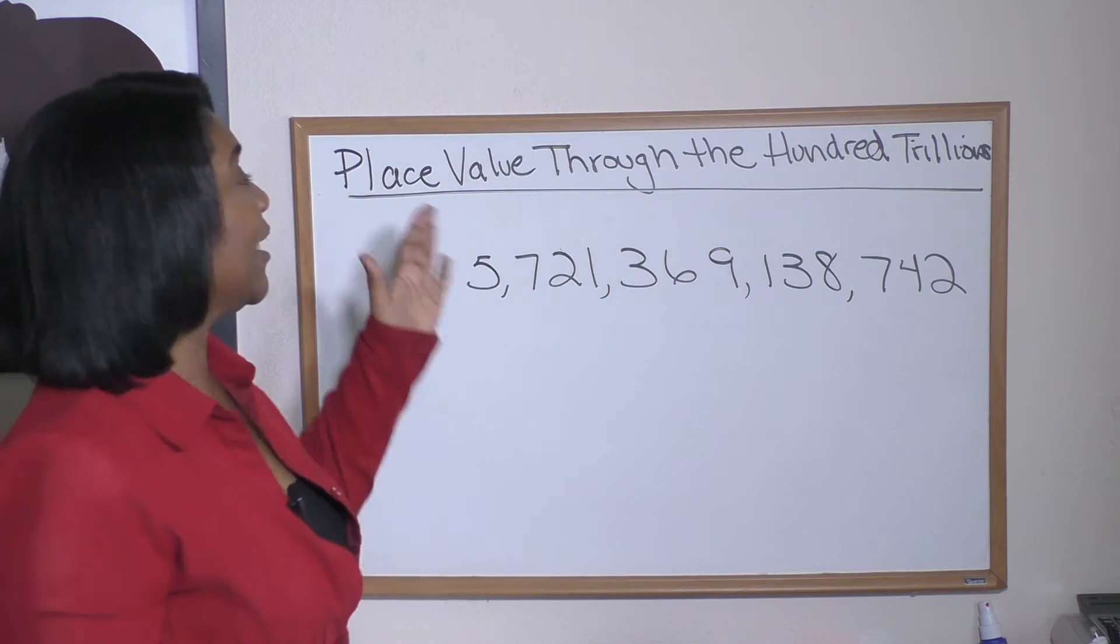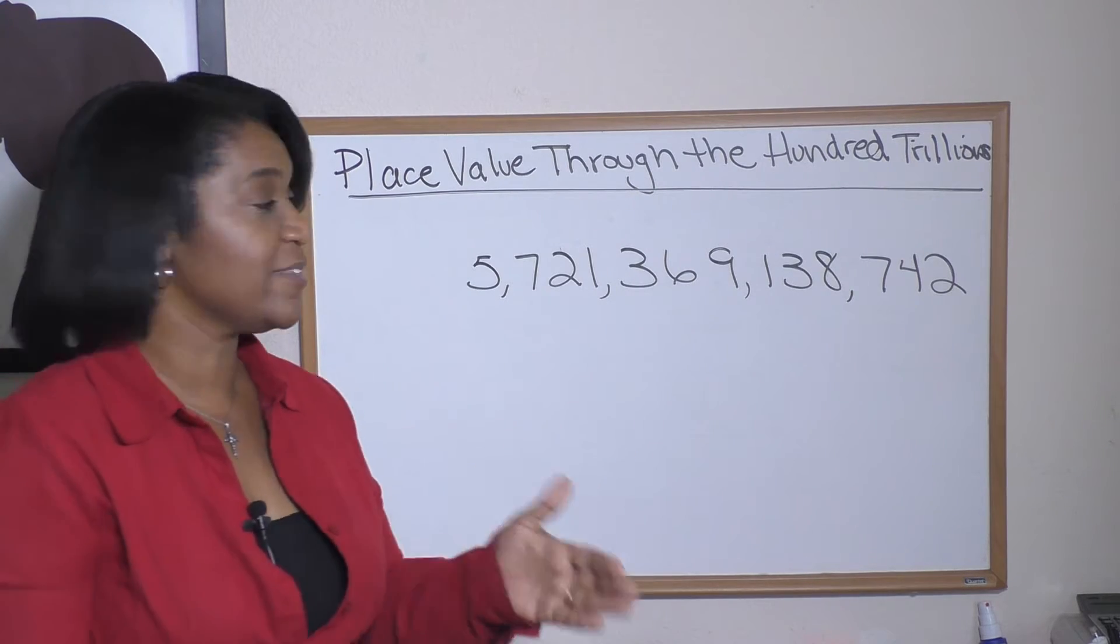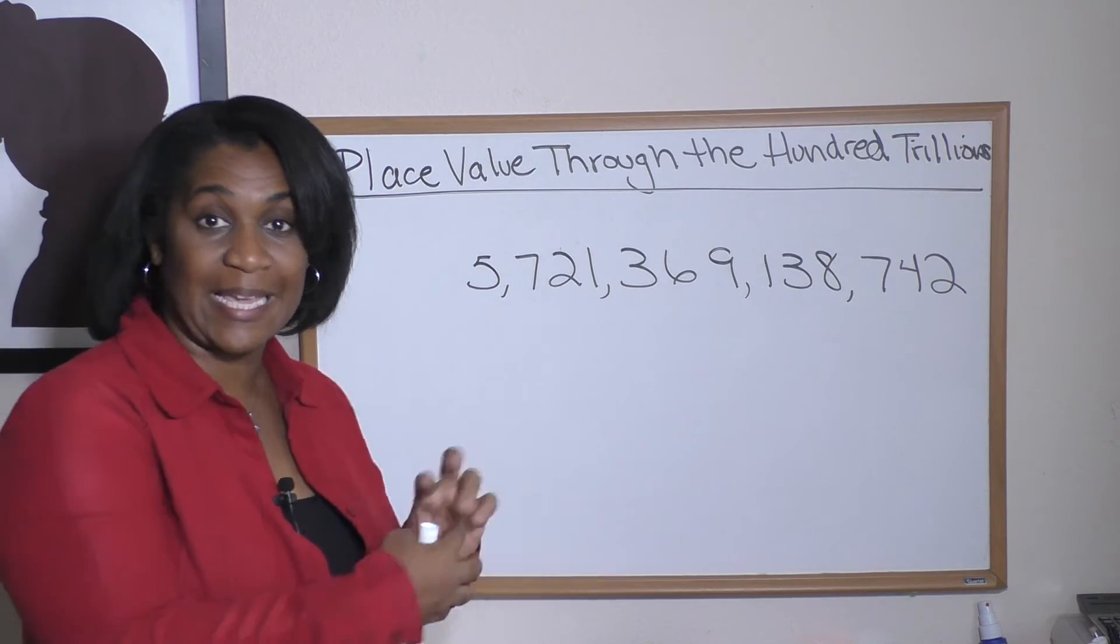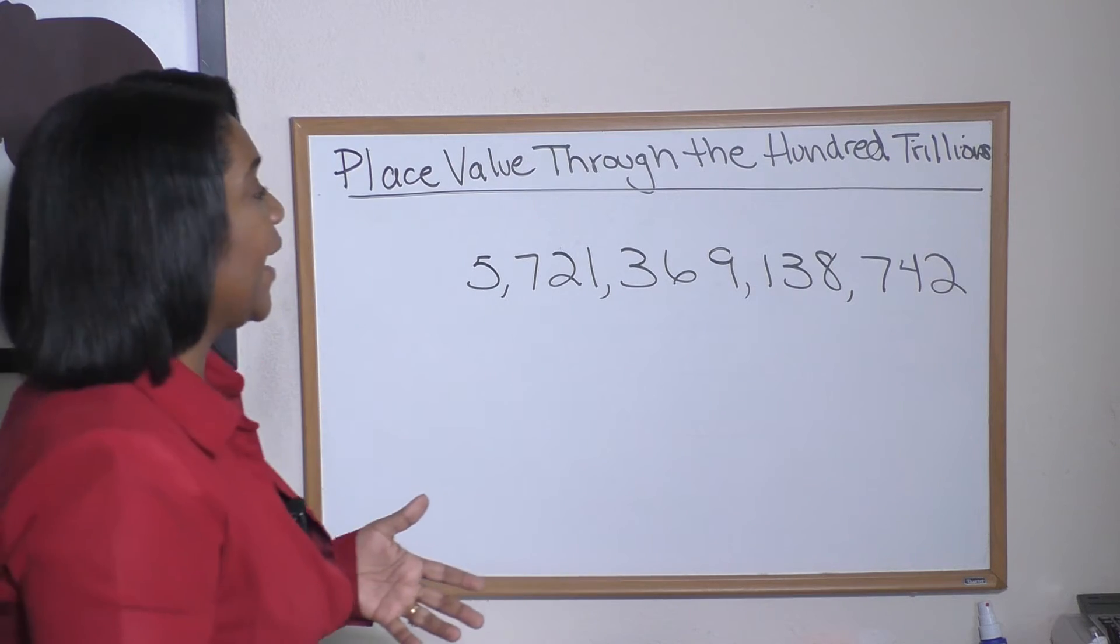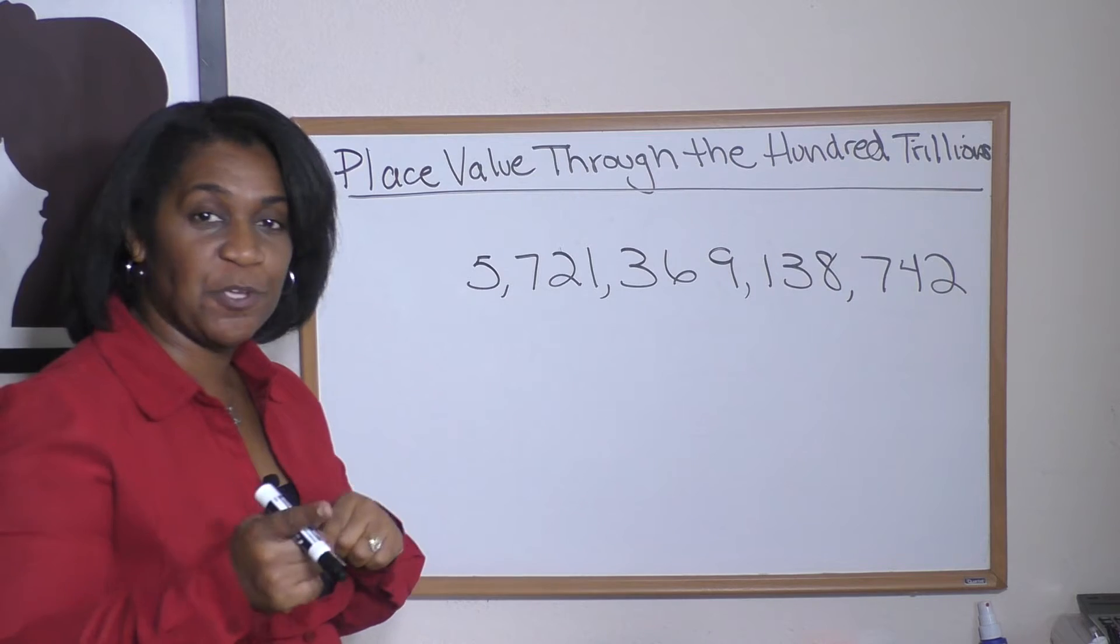All right, so the key when dealing with place value is you have to recognize that each number, depending on where it falls in your number, has a value. And the thing that's going to help you is if you let the commas do the talking.